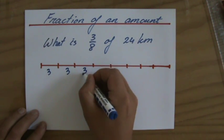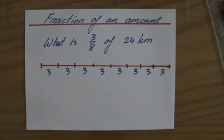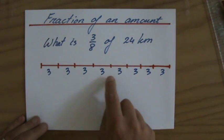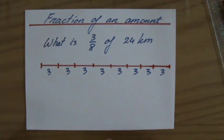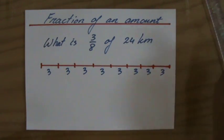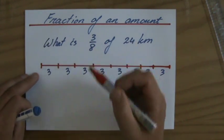So the whole track is divided into parts of 3 kilometers. The whole thing is 1, 2, 3, 4, 5, 6, 7, 8 times 3, so 24 kilometers long. Now, how many parts, how many of those stamps do I get? I get 3 of them.